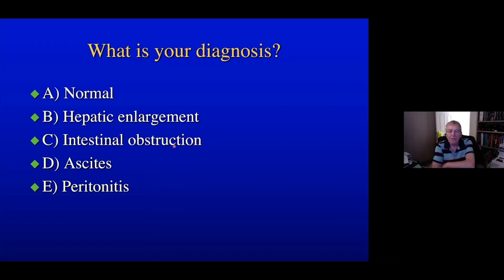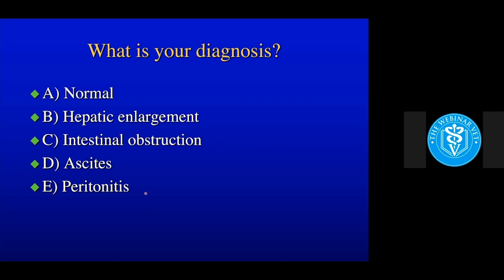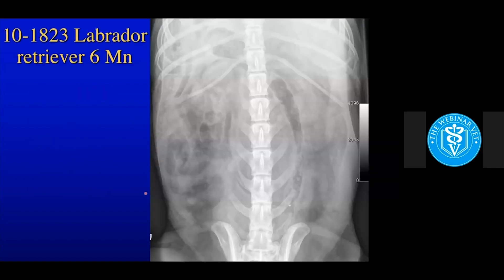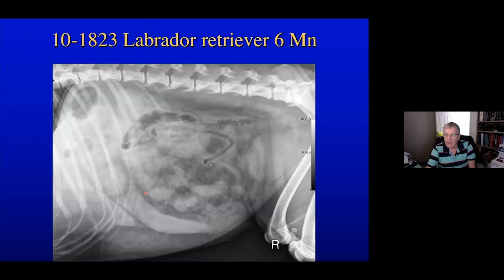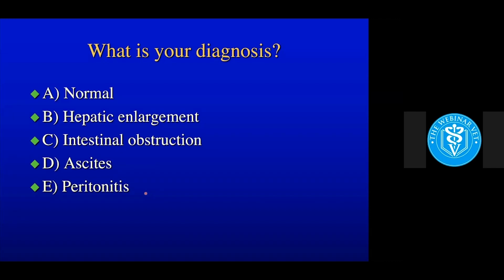So the question is: what is your diagnosis? Is this normal? Is there hepatic enlargement, intestinal obstruction, ascites, or peritonitis? It looks like 25% think it's normal, 17% think there is some hepatic enlargement, 25% suspect intestinal obstruction, and 33% are saying peritonitis.